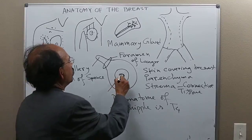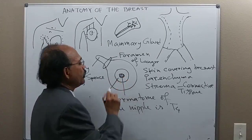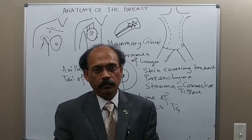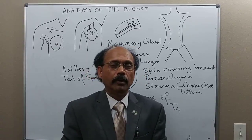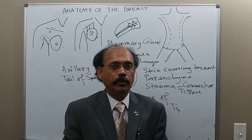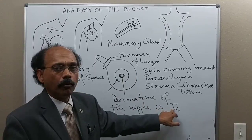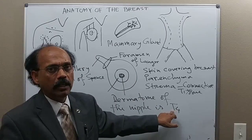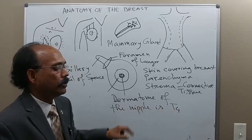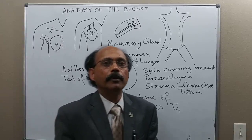The location of the nipple is variable depending on the sex, function, size, and age of the individual. However, the dermatome is T4 in both male and female, at any age, and any size of breast — the dermatome is always fixed.